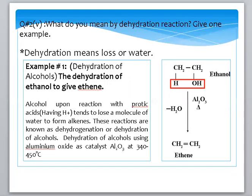The next question, number 5, is: what do you mean by dehydration reaction? Give one example. Dehydration means loss of water. One example is the dehydration of alcohol. Alcohols such as ethanol, propanol, and butanol all have an OH group attached. Taking ethanol, we can dehydrate it by removing water molecules in the presence of aluminium oxide.